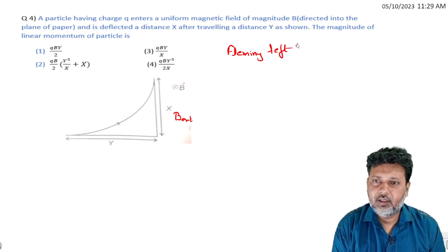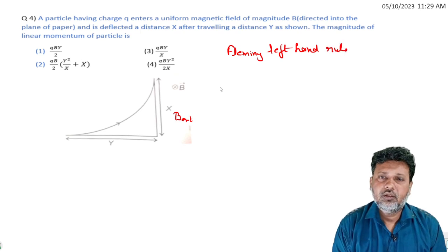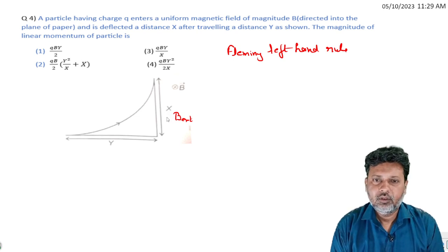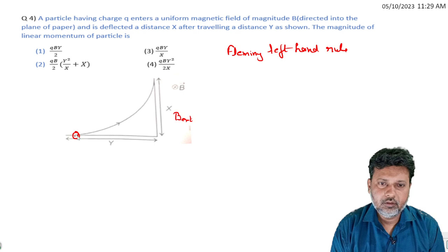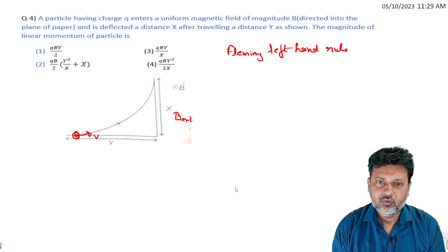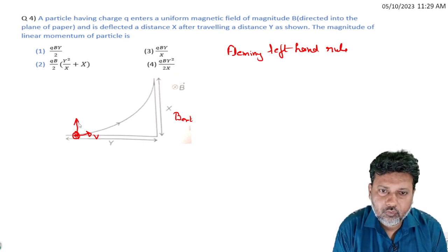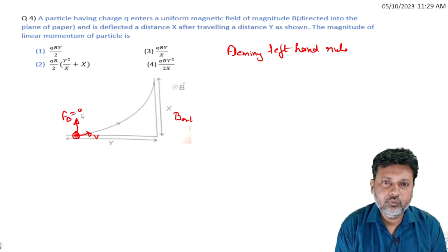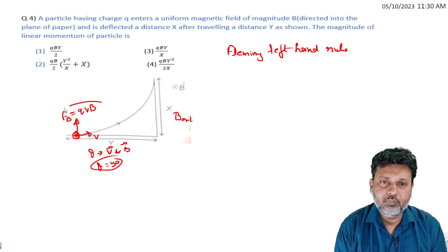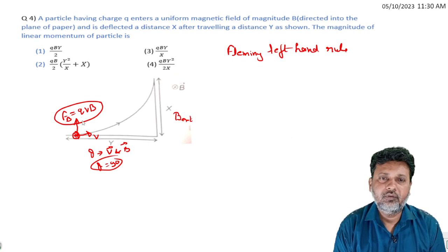Using Fleming's left-hand rule, when a charged particle moves with velocity v, the magnetic force will be qvB. Since theta equals 90 degrees—the angle between velocity and magnetic field—we have sin theta equals 1. So the magnetic force is simply qvB.